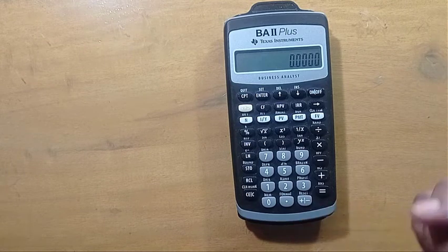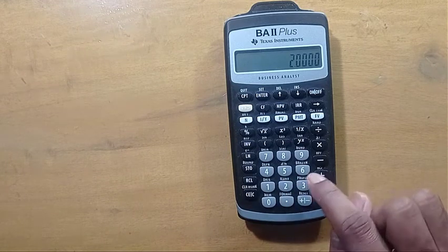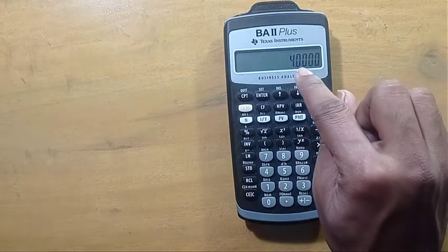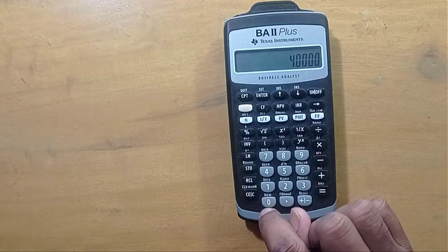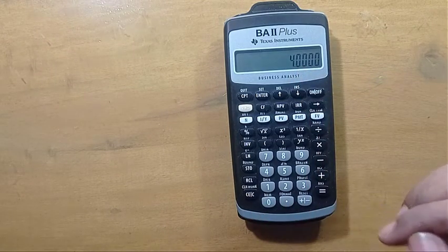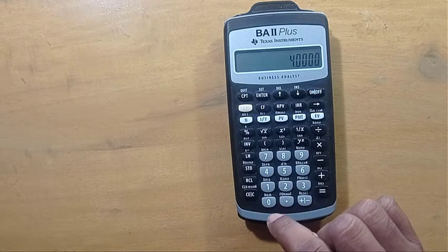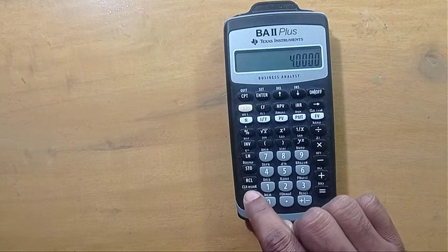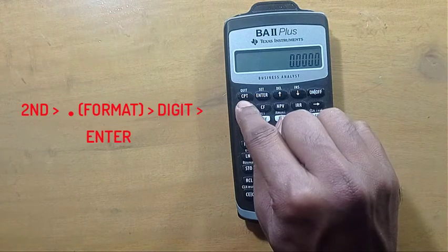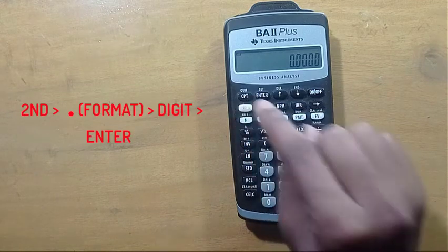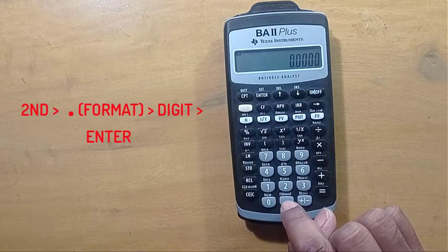So if we calculate anything it will show four digits after the decimal. If you need only two digits, then you have to press the second yellow key and format.